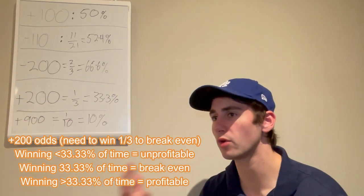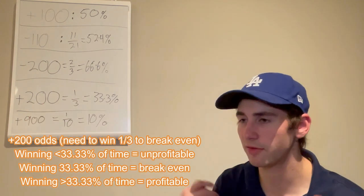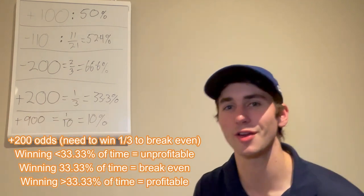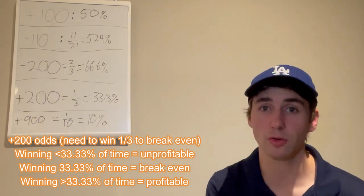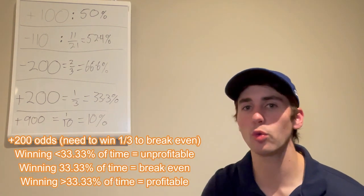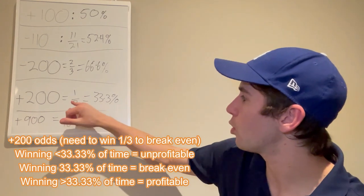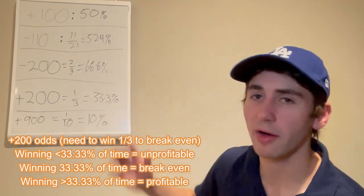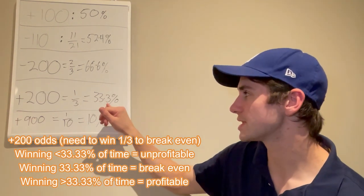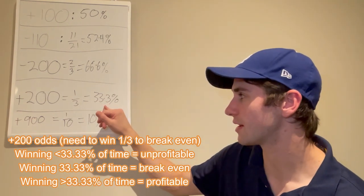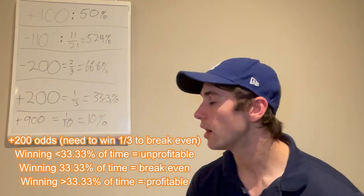Plus 300, you'd have to win one out of four times. So at plus 200 odds, with a unit size of $100, you lose $100, you lose $100, you profit $200 — so you only have to win one out of three times to break even. If you're winning more than one out of three times, you're a profitable sports bettor. If you are winning less than one out of three times — say 30% of the time — you're a losing sports bettor. You're an ATM machine for the sports book.